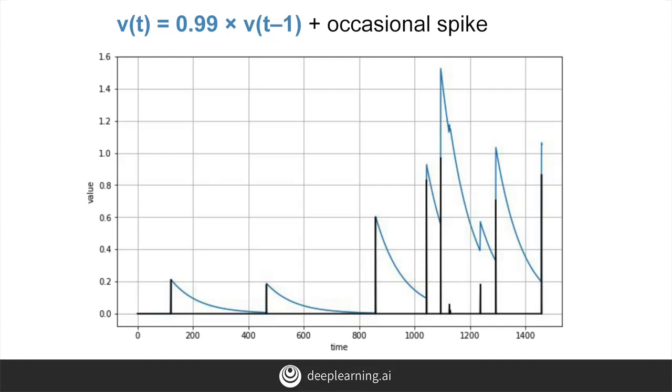Namely, it correlates with a delayed copy of itself, often called a lag. In this example, you can see at lag one, there's a strong auto-correlation.